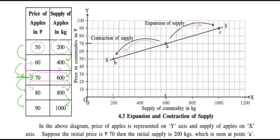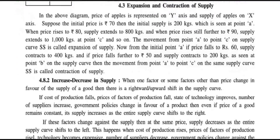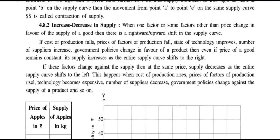Expansion and contraction are always on the same supply curve — this is very important. The curve SS does not change; only movement along the same curve occurs. The supply curve is not shifting.